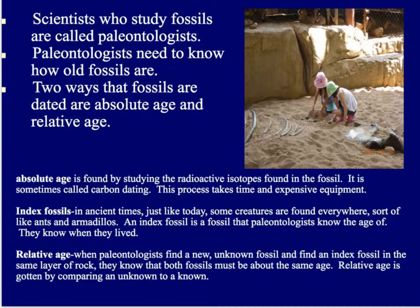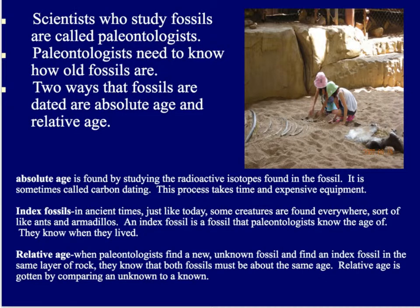So if you're a paleontologist out in the field and you find a new fossil, you really don't want to have to wait for days or weeks or pay a lot of money. A quicker and easier way to get the age of a fossil is through something called an index fossil. In ancient times, just like today, some creatures are found everywhere, sort of like ants and armadillos. An index fossil is a fossil that paleontologists know the age of — they know when those creatures lived. For example, there's a little creature called a trilobite. Let's say trilobites lived 300 million years ago. You're a paleontologist digging through layers of soil and you find a brand new, strange creature. Right nearby, you find the fossil of a trilobite. Since you found it in the same layer of soil as the new creature, that trilobite serves as an index fossil because you use its age to tell you the age of something else.